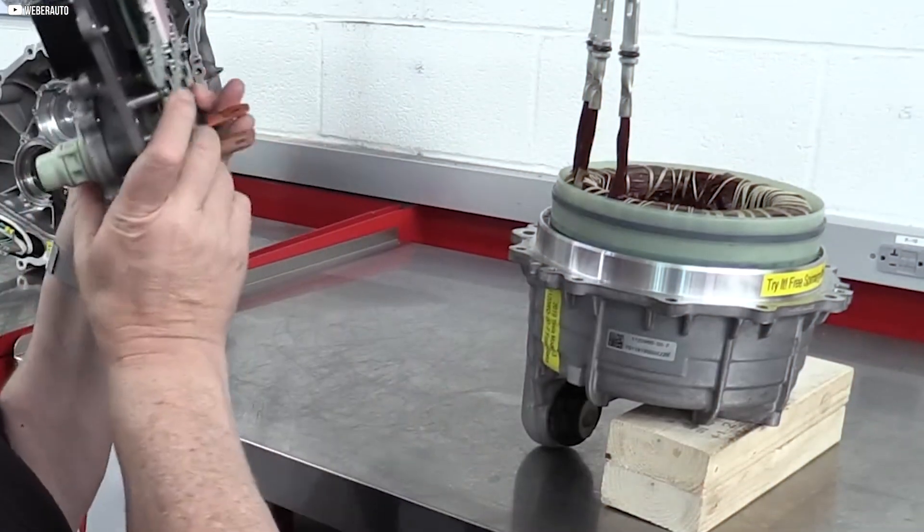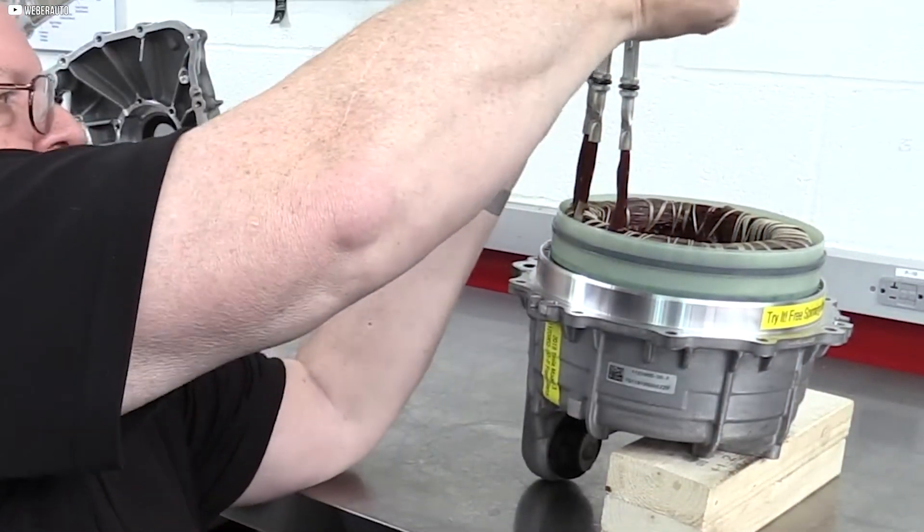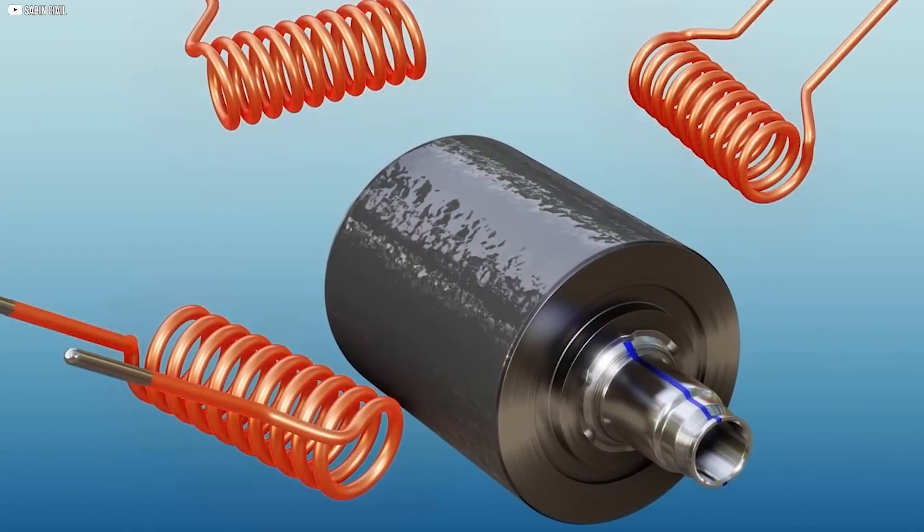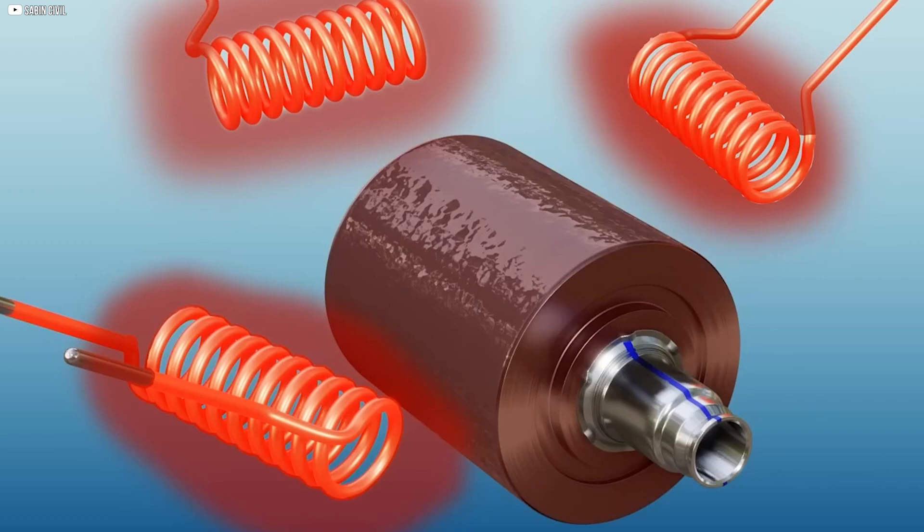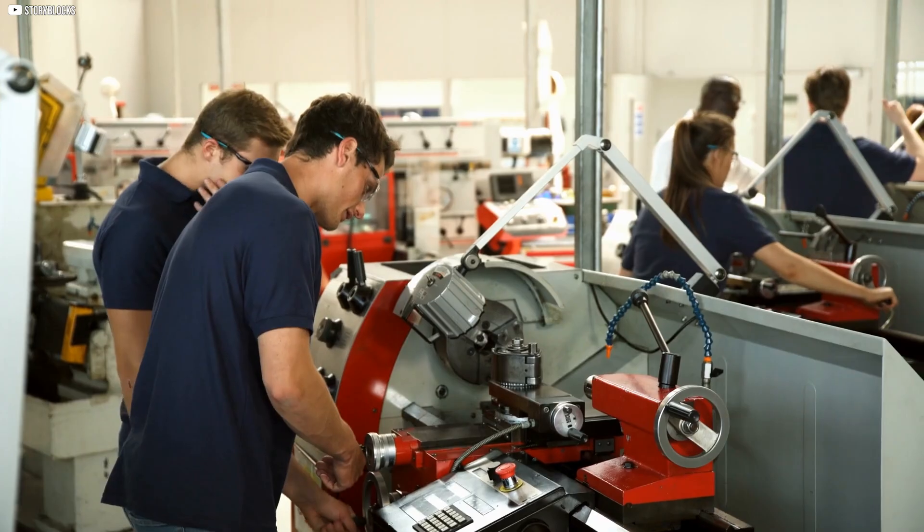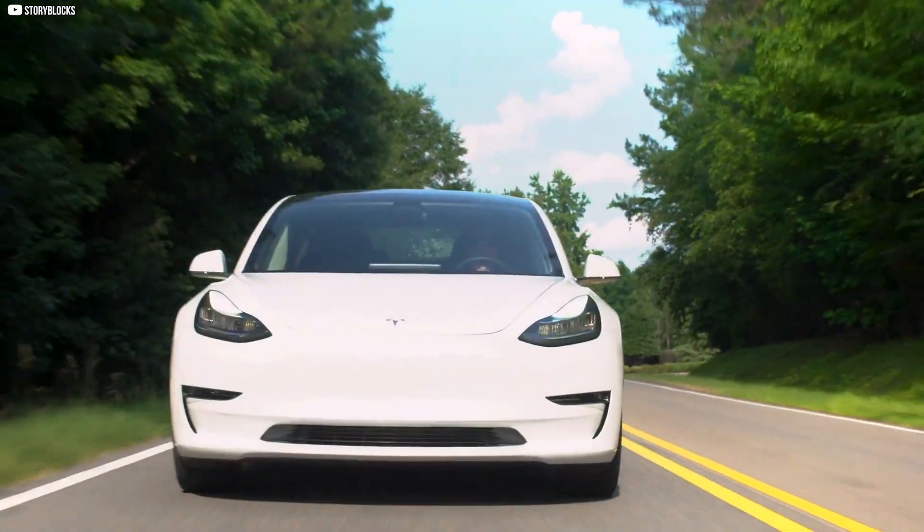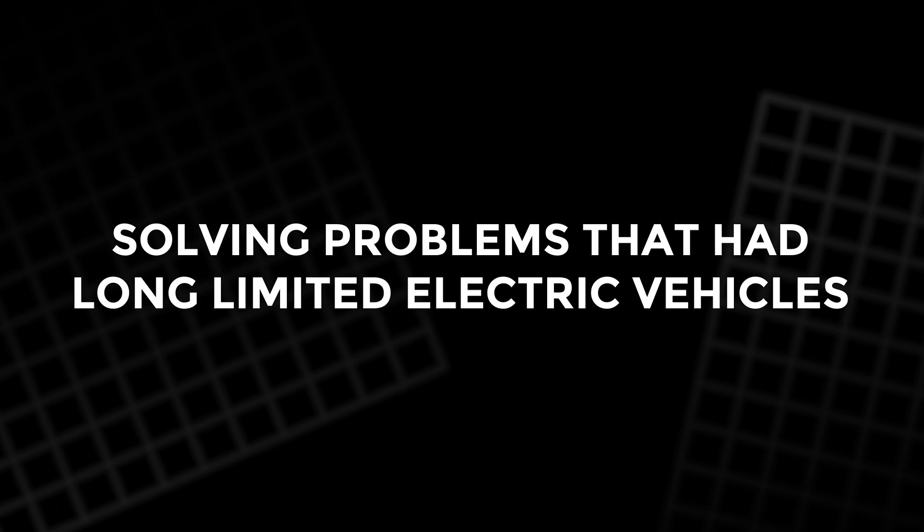The Internal Permanent Magnet Synchronous Reluctance Motor. By blending the fierce pull of permanent magnets with the subtle force of magnetic reluctance, Tesla built a motor with explosive low-speed torque and exceptional highway efficiency, solving problems that had long-limited electric vehicles.